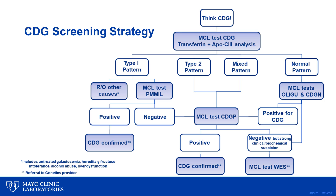Though many providers have started with a molecular panel or whole exome sequencing and sent us for confirmatory biochemical testing, we do suggest starting with Mayo test code CDG. This will return one of four interpretations, and depending on the result and your level of suspicion for CDG, you can pursue one of several different avenues, culminating in a virtual complete workup and possible diagnosis for CDG.